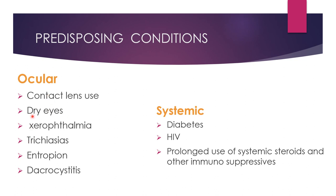Other predisposing factors include dry eyes and xerophthalmia — also called ocular xerosis — which refers to ocular surface dryness of both conjunctiva and cornea, typically associated with vitamin A deficiency. Trichiasis is the misdirection of eyelashes toward the cornea, causing constant irritation and disruption of the corneal epithelium. Entropion is the inward rotation of the eyelid margin, leading to secondary trichiasis. Infective dacryocystitis is one of the most common predisposing factors, especially in our part of the world. Systemic immunocompromised states such as diabetes, HIV, and prolonged use of systemic steroids also reduce host defense mechanisms, making patients more prone to infection.